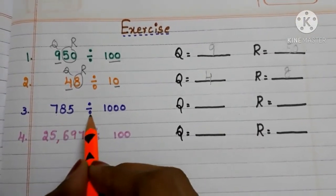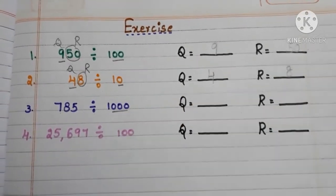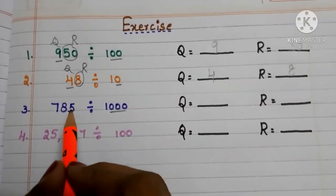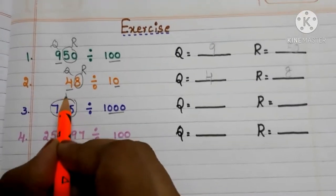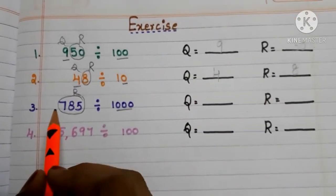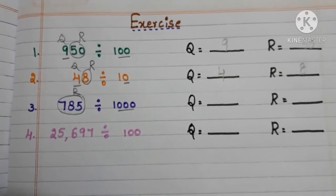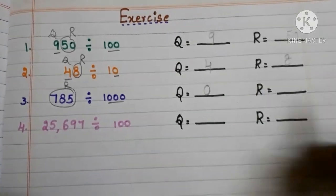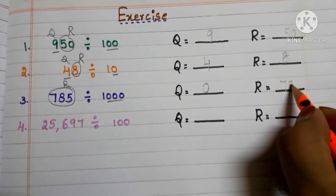Next: 785 divided by 1000. In 1000, three zeros are there. So the last three digits become the remainder. What about the quotient? Here we don't have any remaining digits, so the quotient becomes 0 and the remainder becomes 785.